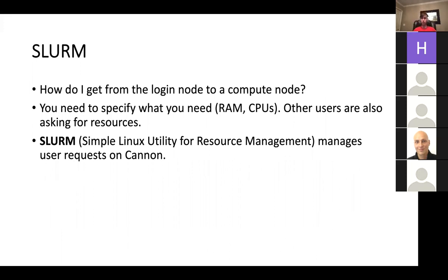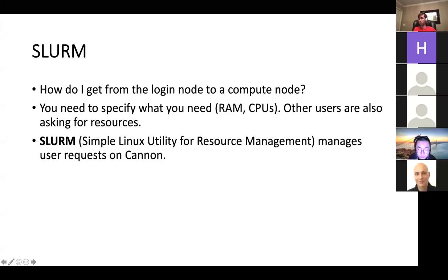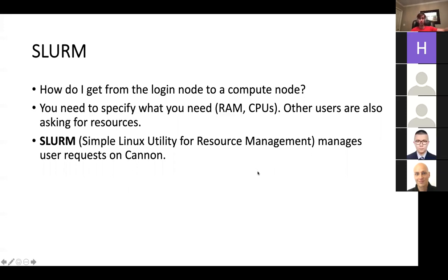To go from a login node to a compute node, you need to specify what you want — for example, 500 gigabytes of RAM and 1000 CPUs. That's obviously a lot of computational power. If everybody asked for that all at once, everything would fill up with no room for anyone else. So Canon has a job manager called SLURM that manages user requests — it decides when to give you what job and how it ranks all the jobs deciding which one gets to go in.